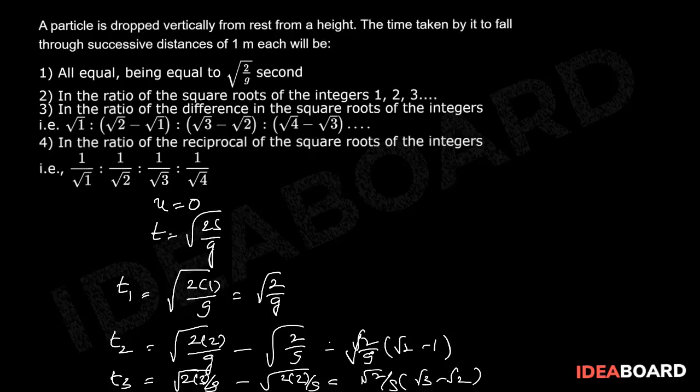Therefore, the ratio of time intervals t1 is to t2 is to t3 and so on equals root 1 is to root 2 minus root 1 is to root 3 minus root 2 and so on. So option 3 is the correct answer.